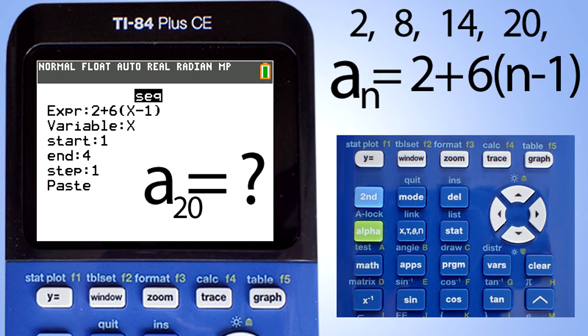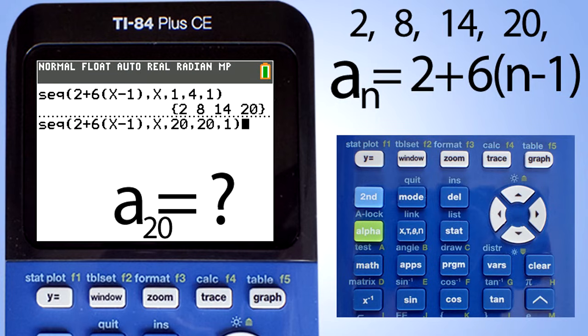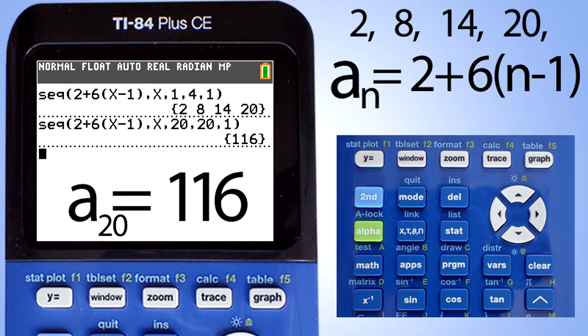We just want the 20th term in the sequence, so enter 20 here for start. Go down to end and also enter 20. Leave step as 1 and go down to paste and press the enter key. Our sequence equation with the new parameters appears. Press the enter key again, and there is the answer, 116. A sub 20, or the 20th term of this sequence, is 116.